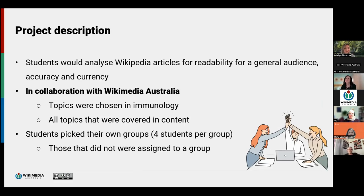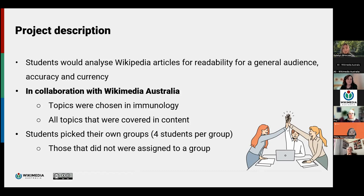Generally, the project aimed to get students to analyse Wikipedia articles for their general readability to a lay audience — looking at the accuracy of information and how current the information was. In collaboration with Wikimedia, some articles on the topic of immunology were selected, and these were all concepts that had previously been covered in the subject. Students then allocated themselves to a group of four.